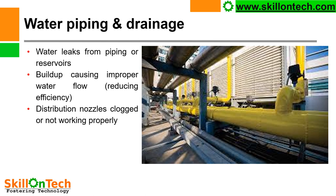Water piping and drainage — you can see a picture of a return header to the cooling tower. Problems generally observed include water leaks from piping or reservoirs, build-up causing improper water flow and reducing efficiency, and distribution nozzles that are clogged or not working properly. All these problems may be inspected and attended to in order to improve the cooling tower water piping and drainage system.